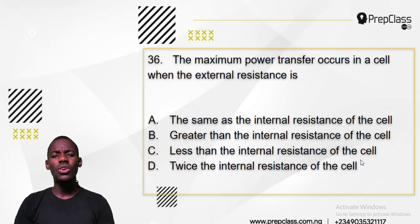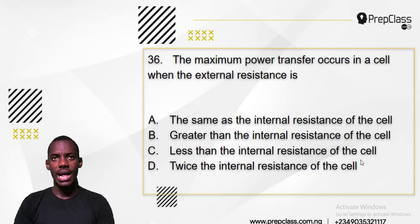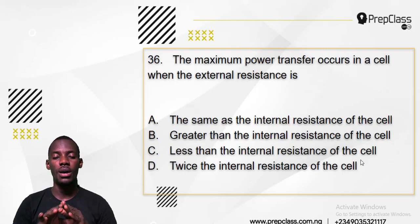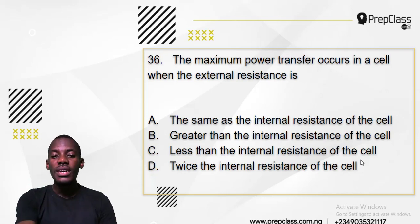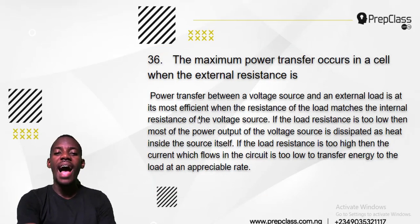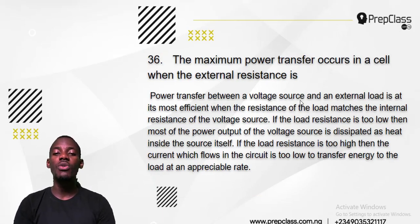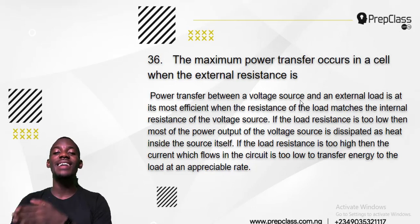Do you have any idea when the battery has maximum power? That means when does the power flow most freely? Power transfer between a voltage source and an external load is at the most efficient when the resistance of the load matches the internal resistance of the voltage source. So when the external resistance and the internal resistance are equal, the power flow is at its maximum.